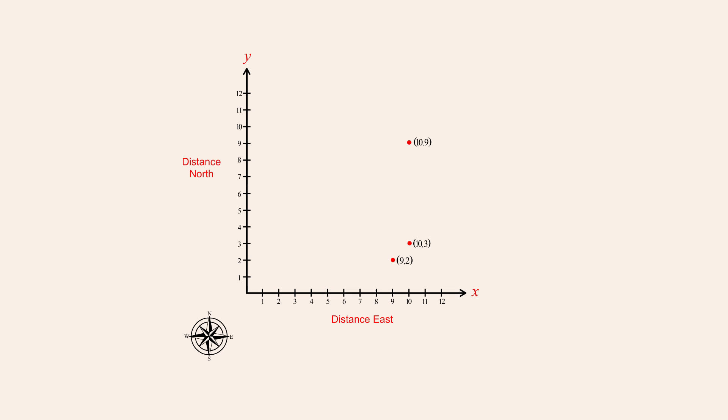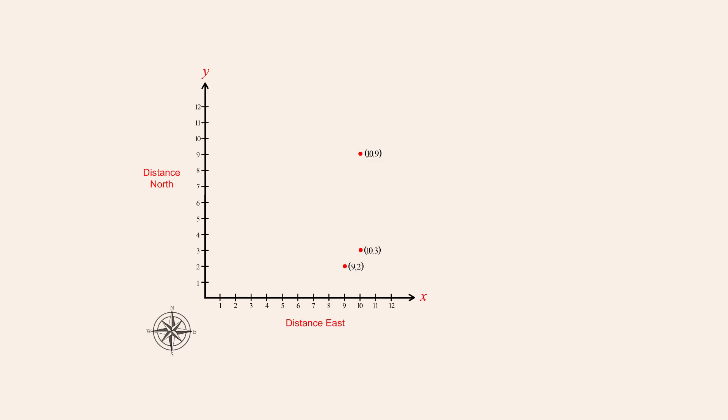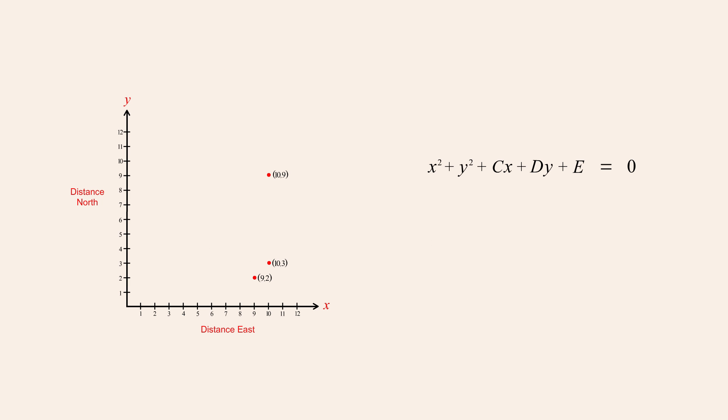We start with the general equation of a circle. Since the circle must include each point, the x and y coordinates of each point must satisfy this equation. Therefore, if we replace x and y in the equation with the x and y coordinates of any one of these points, the equation will be a true statement.